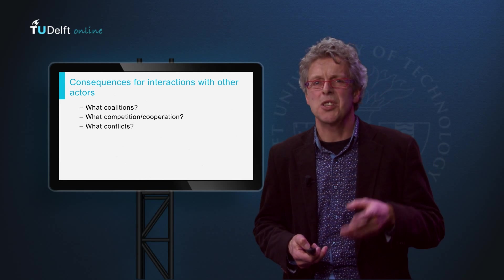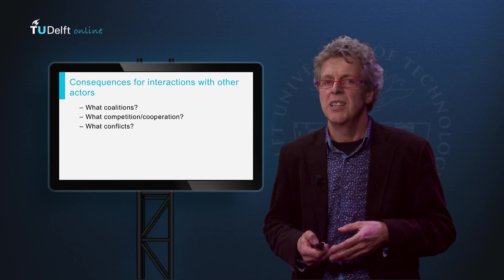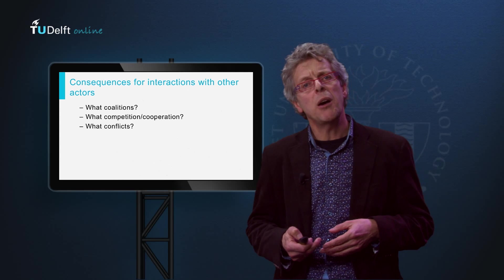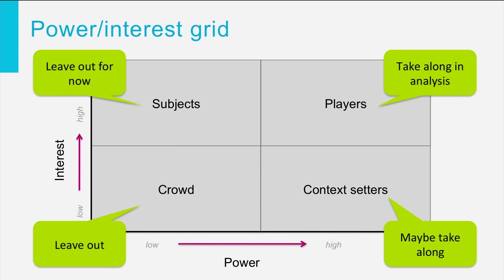Let's take a side step at this subject: whom to involve? A nice way to determine whom to involve in what way is by returning to the power interest grid we saw before. You can also use the matrix with the dedicated and critical actors. In a power interest grid we distinguish four categories of actors: the players, who have high power and high interest; the crowd, with little or no means and low interest; the subjects, who have a high interest only; and the context setters, who have important means but little interest.